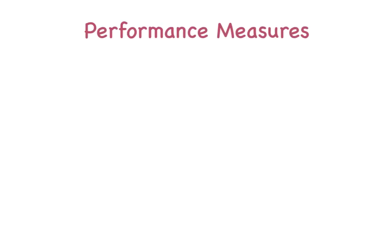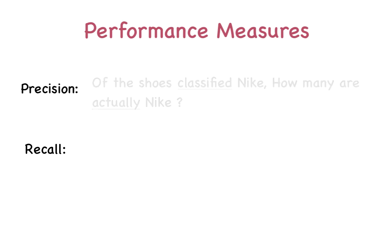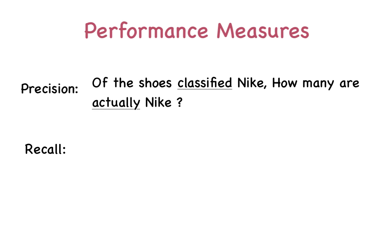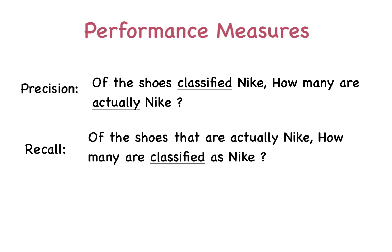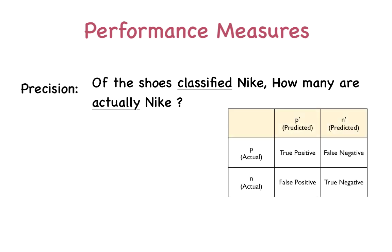In order to overcome this disadvantage of simple accuracy, we introduce two new measures: precision and recall. Precision states: of the number of shoes classified as Nike, what fraction of them were actually Nike? While recall states: of the number of shoes that are actually Nike, what fraction of them were classified correctly as Nike? Let's break these statements down with the help of our confusion matrix.